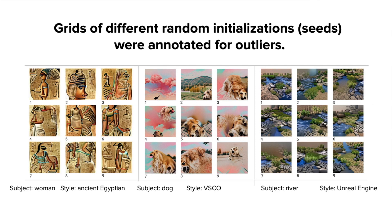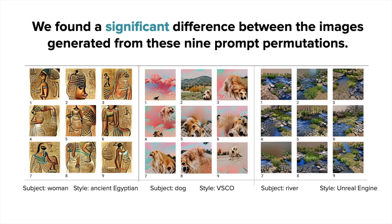After presenting these grids to annotators, we found that there was actually a significant difference. The number of generations judged as outliers was significant when compared to the number deemed not outliers. This implies that the stochastic components of the generation process can significantly vary the quality of generation. The design guideline that follows is to generate between 3 to 9 different seeds to get a representative idea of what a prompt can return.